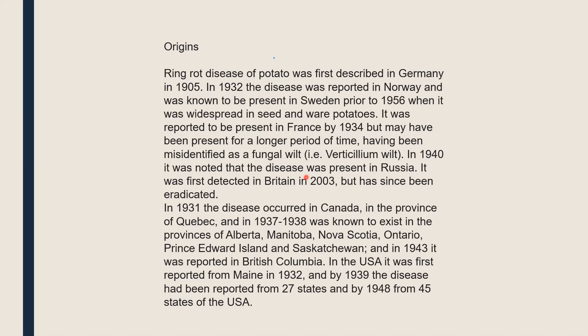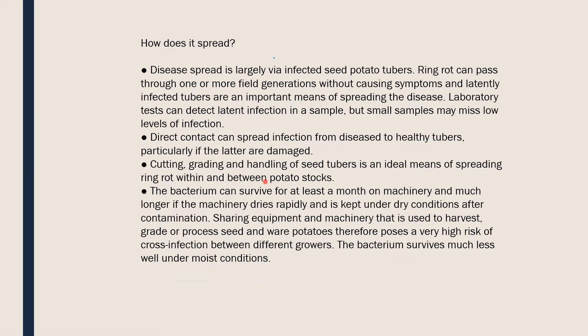In 1931 it was reported in Canada in the province of Quebec, and in 1937 to 1938 it was known to exist in Alberta, Manitoba, Nova Scotia, Ontario, Prince Edward Island, and Saskatchewan. In 1943 it was reported in British Columbia. In the USA it was reported from Maine in 1932, and by 1939 the disease had been reported from 27 states, and by 1948 from 45 states. So its spread is very much easier.